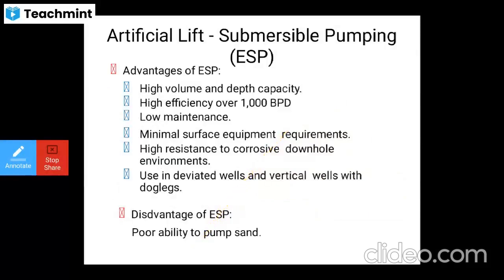Advantages of ESP: high volume and depth capacity, high efficiency over 1,000 barrels per day, low maintenance, minimal surface equipment required, very high resistance to corrosive environments, and can be used in deviated wells and vertical wells with dog leg severity (DLS). During well design, the drilling engineer calculates and designs the geometry of the well and sets the DLS according to the type of well, whether deviated or vertical. The main disadvantage is very poor ability to pump sand from the well.